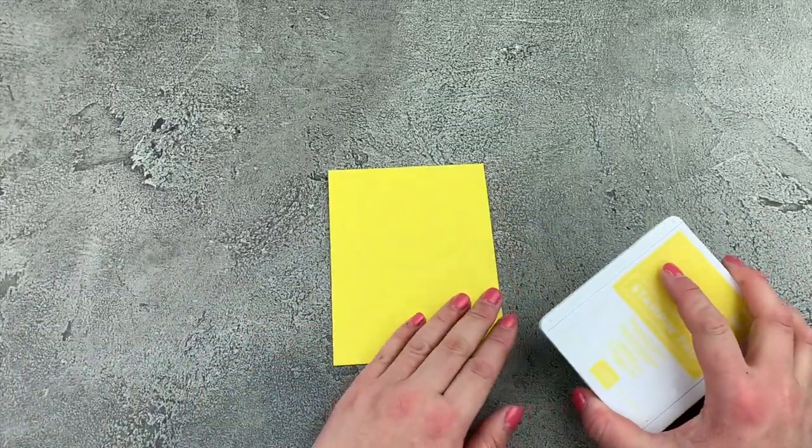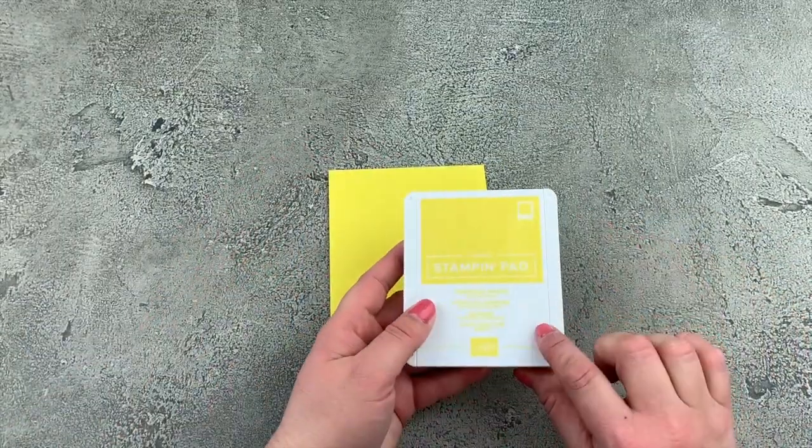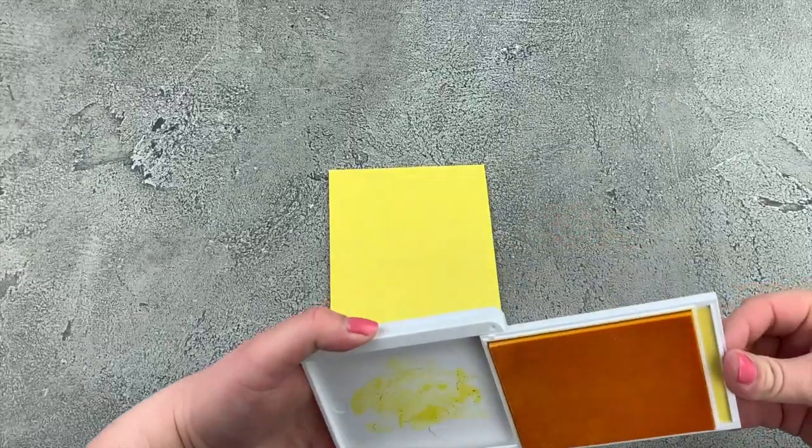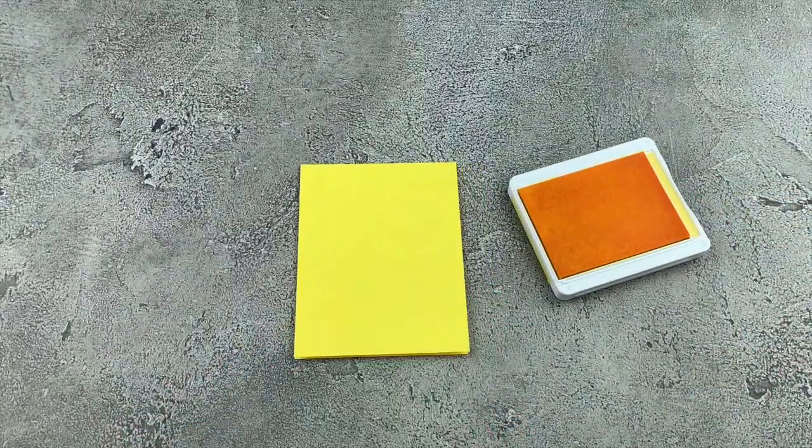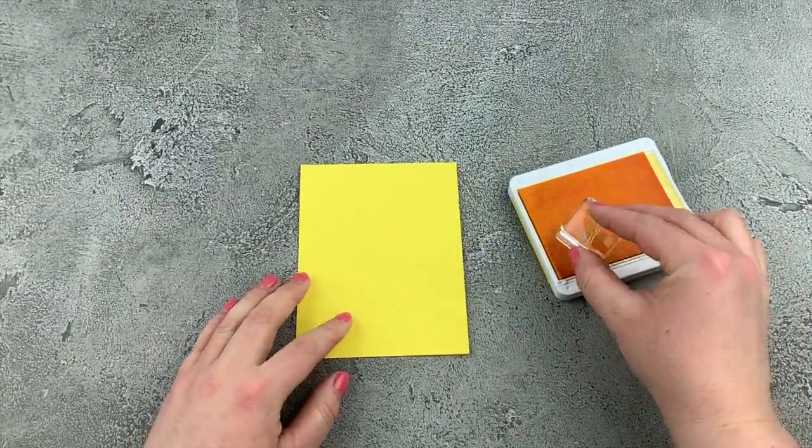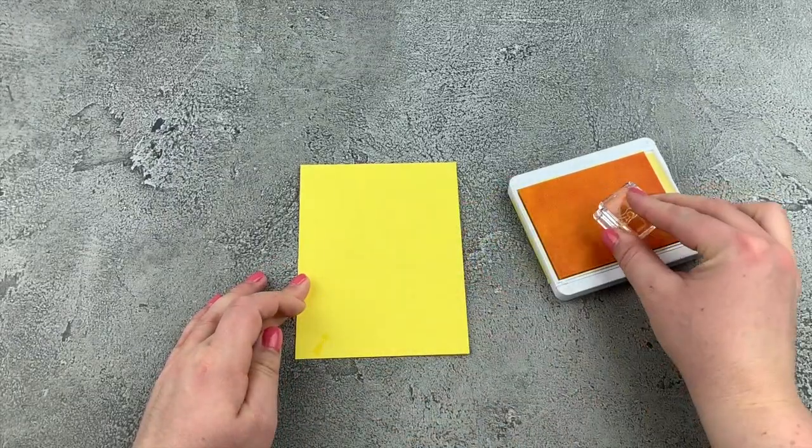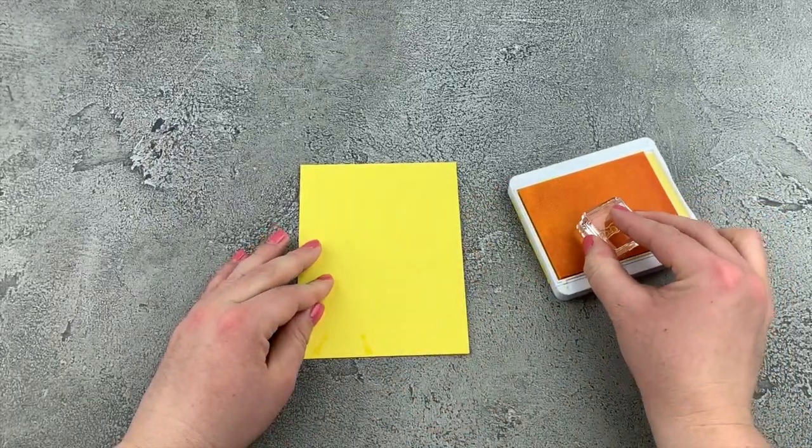So before we start assembling onto our card base, I want to do some stamping with the pineapple punch. So I've got the little party hat stamp, and I'm just going to stamp a border around my card.